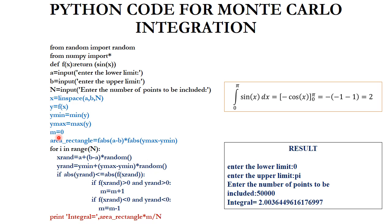We initialize m = 0 for counting points under the curve, then calculate the area of the rectangle as |b − a| * |y_max − y_min|. We start a for loop and generate a scaled x value: x_rand = a + (b − a) * random(), which produces a value between a and b.